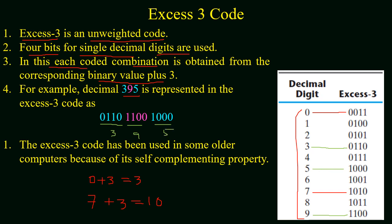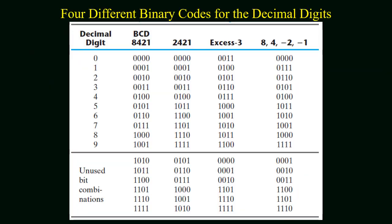The XS3 code is used in some old computers because of its self-complementing property. Now in the given table we have 4 different binary codes for decimal digits 0 to 9. The 4 binary codes are BCD or 8421, 2421, XS3, and 84-2-1.